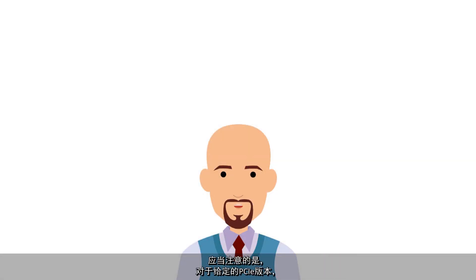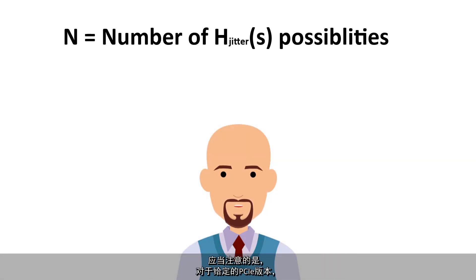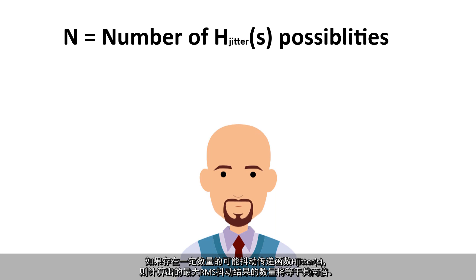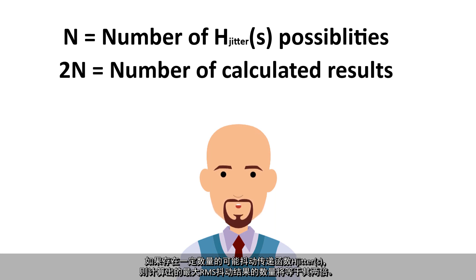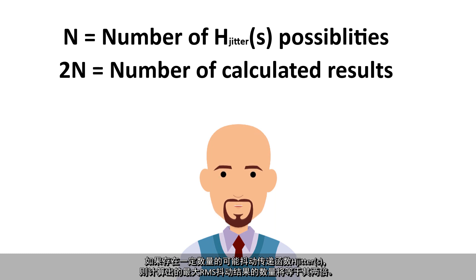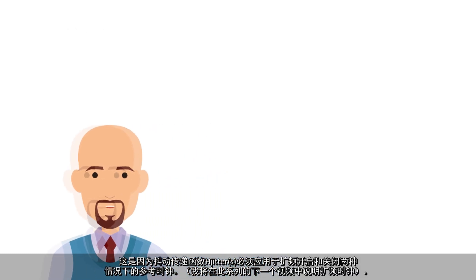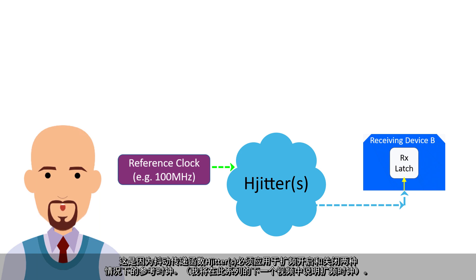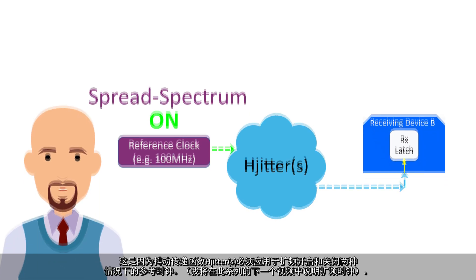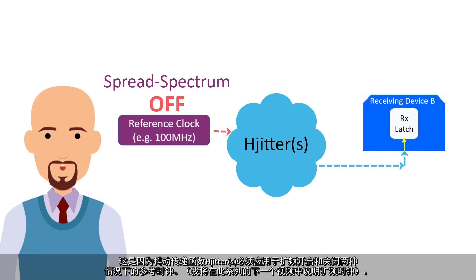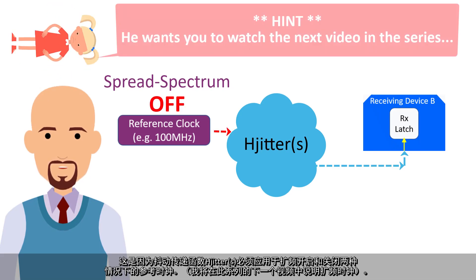We should note here that if there are a certain number of possible jitter transfer functions for a given PCIE version, then there are twice as many calculated maximum RMS jitter results. This is because the jitter transfer function must be applied to a reference clock with spread spectrum on, as well as to a reference clock with spread spectrum off. I'll be explaining spread spectrum clocks in the next video of this series.